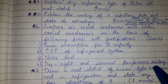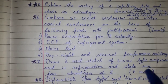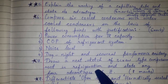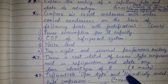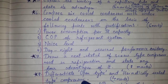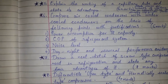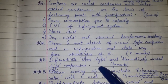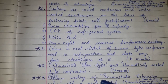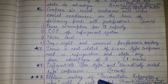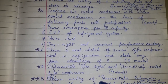The comparison points for condensers include: power consumption per TR capacity, COP of refrigerant system, noise level, day and night and seasonal performance consistency. Question number seven: draw a neat sketch of screw type compressor used in refrigeration and air conditioning and state any four advantages of it, for eight marks. Some questions are asked for more marks like eight marks, so you have to write and draw the required sketches.